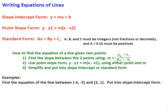Welcome to the lecture on writing equations of lines. I'm going to start by reviewing three different forms for the equation of a line. The first one is called the slope-intercept form, and this is the most useful form that we'll have. It's y equals mx plus b, and it's used quite a bit for finding slopes.